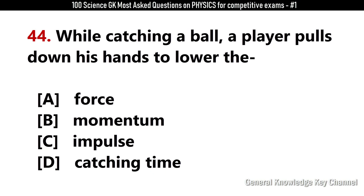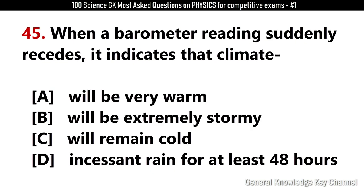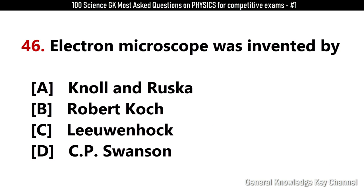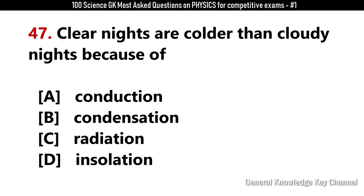While catching a ball, a player pulls down his hands to lower the? Answer B: Momentum. When a barometer reading suddenly recedes, it indicates that climate? Answer B: Will be extremely stormy. Electron microscope was invented by? Answer A: Knoll and Ruska. Clear nights are colder than cloudy nights because of? Answer C: Radiation.